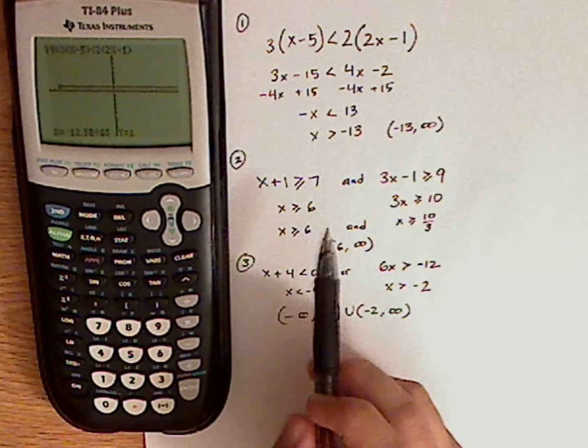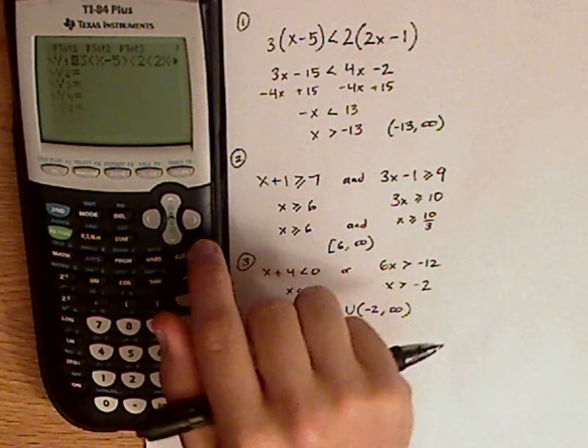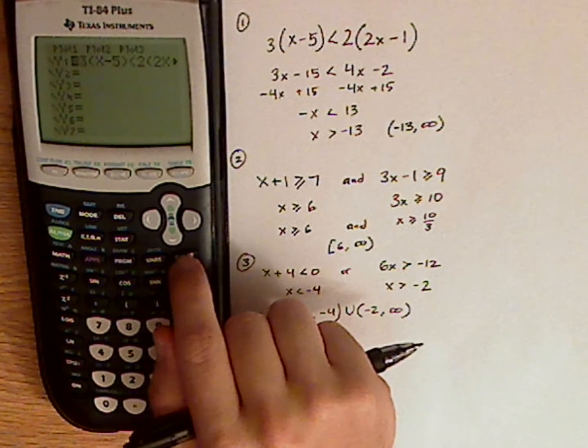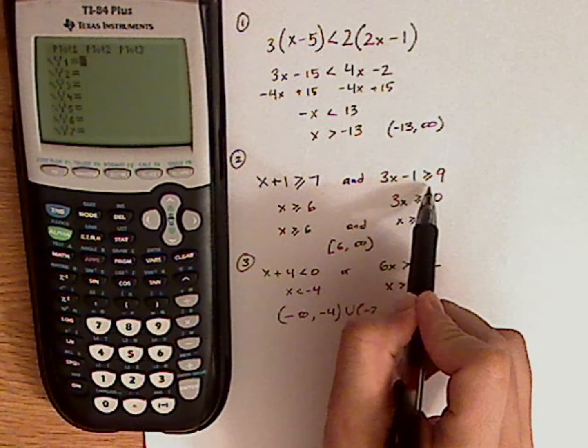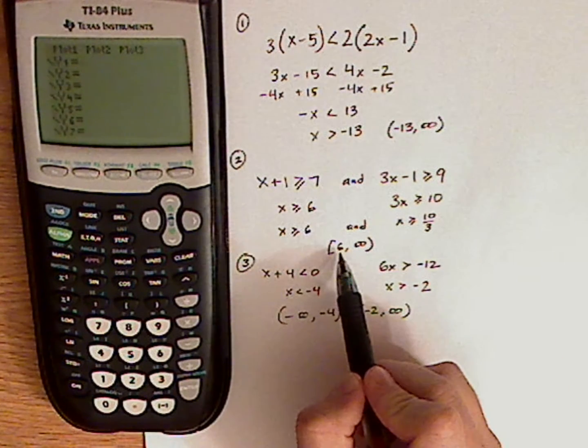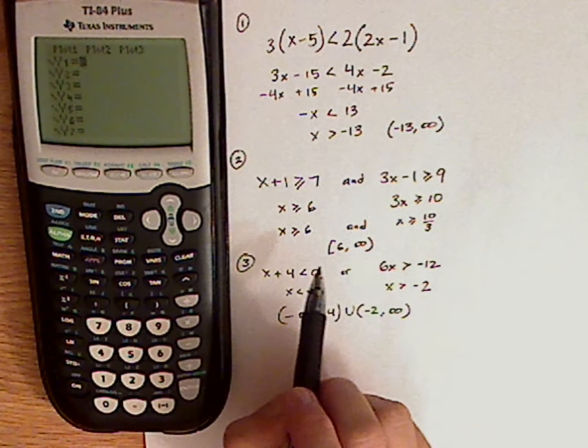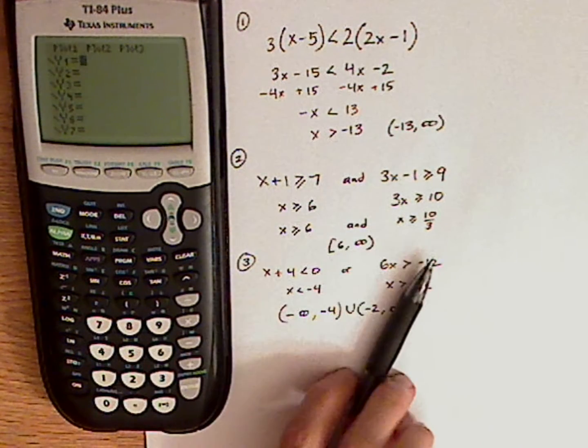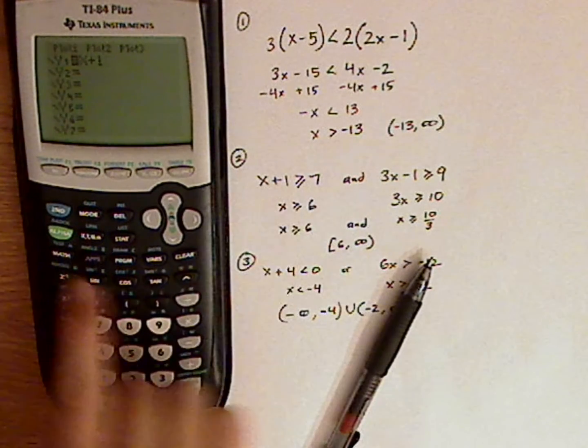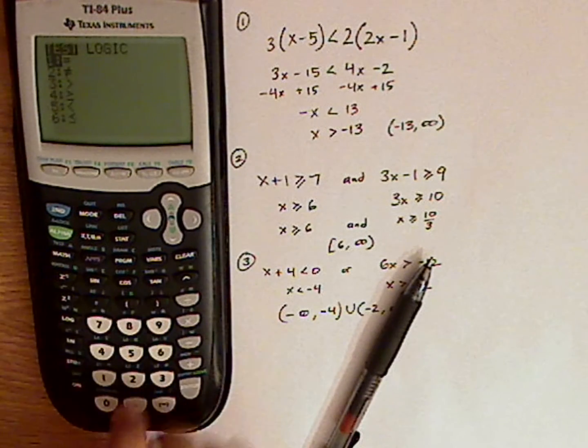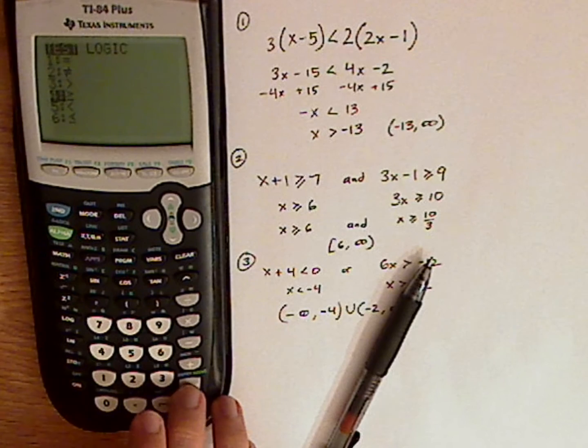Alright, now let me show you how to do a compound inequality. Go back to y equals, and I'm just going to clear this, and I'm just going to type in the original problem. Doing all the work, I showed that the interval includes the 6 to positive infinity. So, let me just type this in. So, it would be x plus 1, I need the inequality sign. So, that would be under test, greater than or equal to 6.